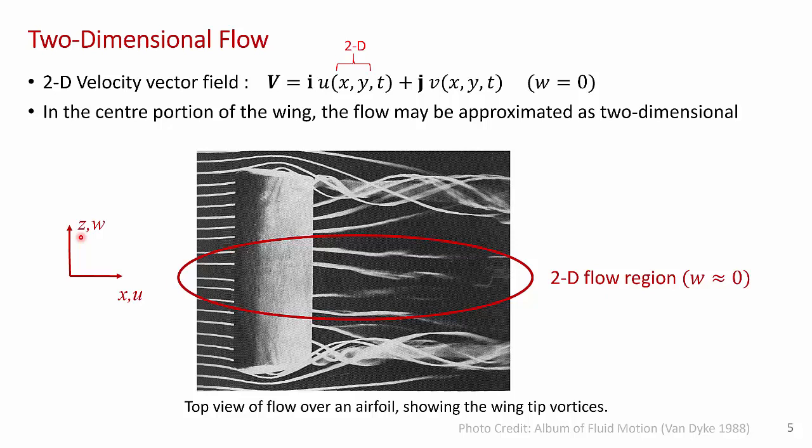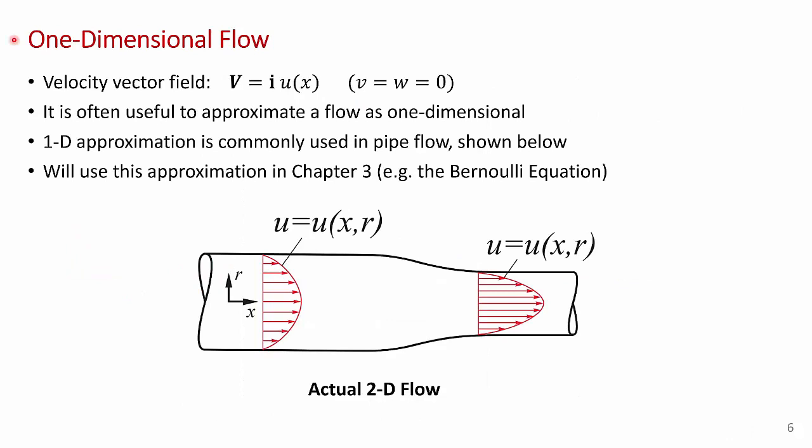And as we'll talk about later in the course and in more advanced courses, if you analyze this type of flow, there's some big advantages to being able to approximate a flow as two-dimensional. If you're doing this problem numerically, it requires a lot less computational power and computer memory if you're not storing the information in the third dimension. And in some cases, it's actually useful to approximate a flow as one-dimensional. Here, I've written a typical one-dimensional velocity vector. So we only have one component of velocity, in this case in the x direction, that's only a function of one coordinate x. So we have v and w equal to zero. That's a typical one-dimensional flow. And as I mentioned, it's often useful to approximate a flow as one-dimensional. We're going to be doing that quite often in this chapter.